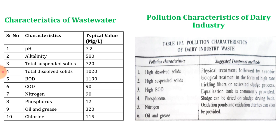The typical characteristics of dairy wastewater include pH, alkalinity, TSS, TDS, BOD, COD, nitrogen, phosphorus, oil and grease, and chlorides. Typical values in mg/L are: pH 7.2, alkalinity 580, TSS 720, TDS 1020, BOD 1190, COD 1990, nitrogen 12, phosphorus 320, and chlorides 115.